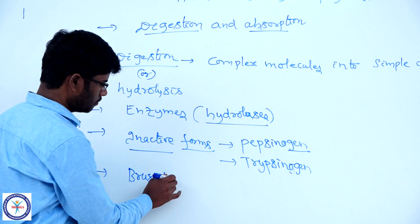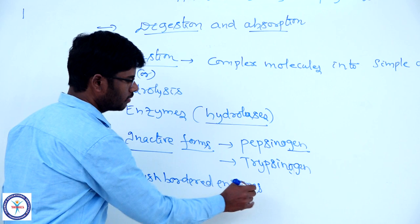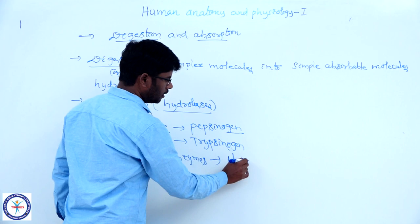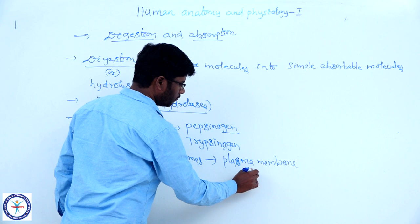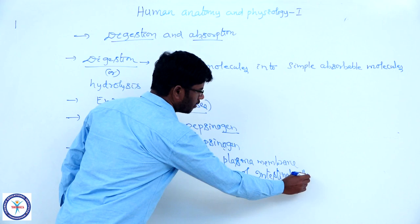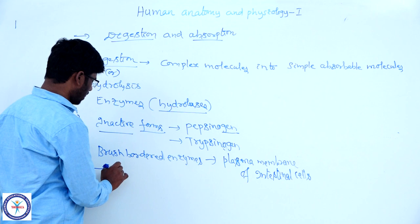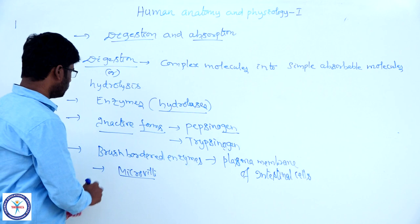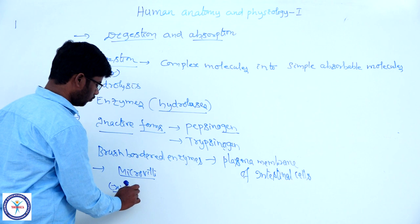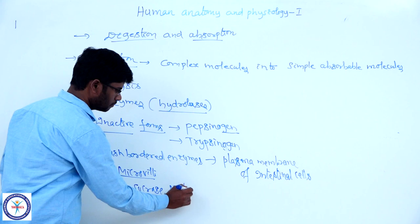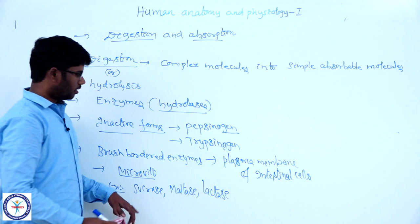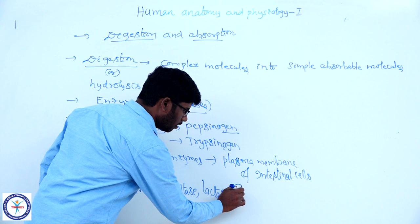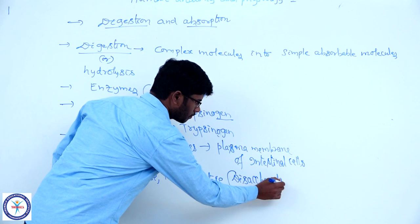There are some enzymes named as brush-bordered enzymes. These brush-bordered enzymes are generally seen on the plasma membrane of intestinal cells. Microvilli are small projections present on the plasma membrane of intestinal cells. Examples of brush-bordered enzymes include sucrase, maltase, and lactase, which are commonly called disaccharidases.